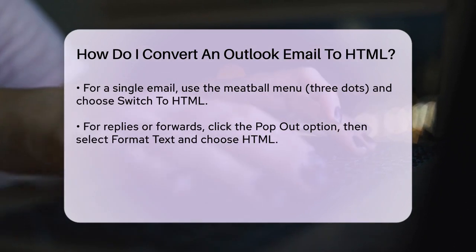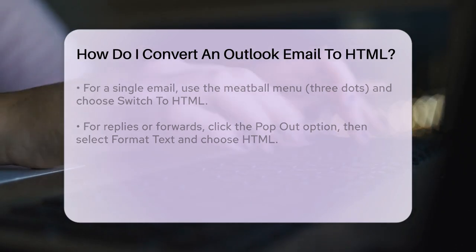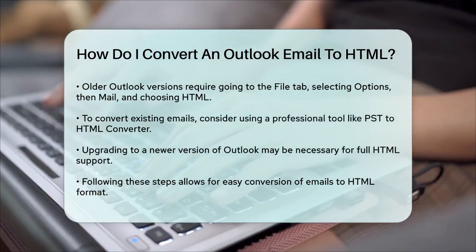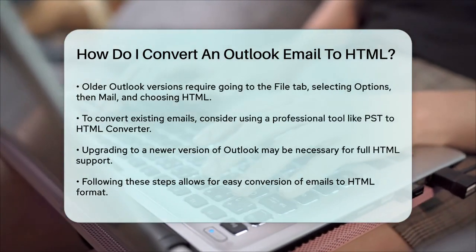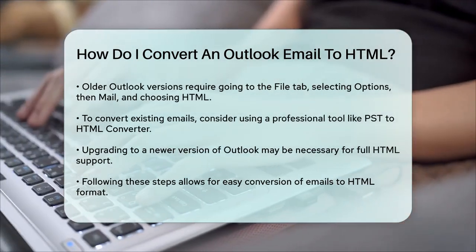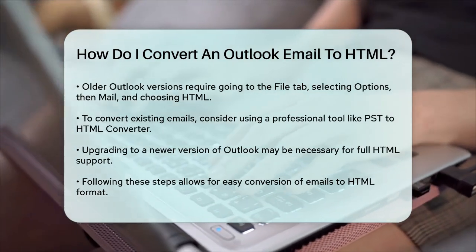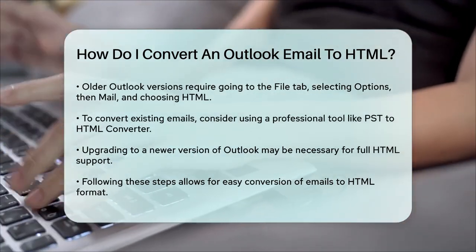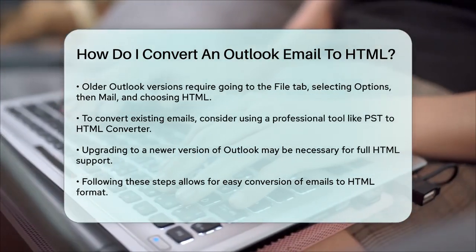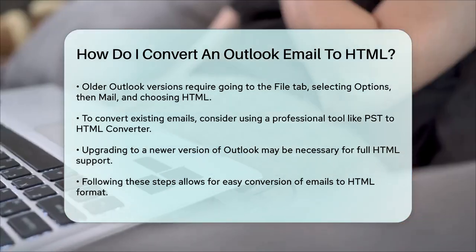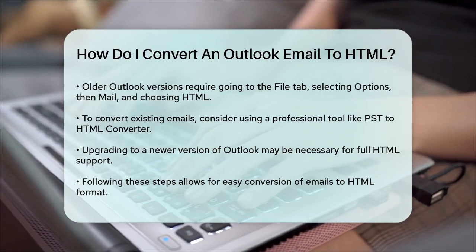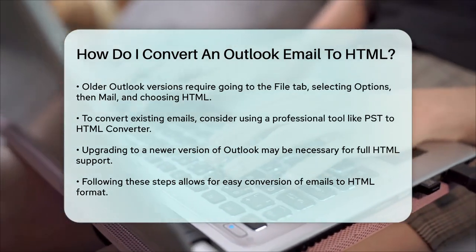If you need to convert existing emails to HTML, especially if they are corrupted or old, you might need a professional tool. Tools like the PST to HTML Converter can help you export Outlook emails to HTML format, preserving all the attributes and components of the original emails. Remember, if you're using an older version of Outlook that doesn't support HTML, you'll need to upgrade to a newer version to take full advantage of HTML formatting.